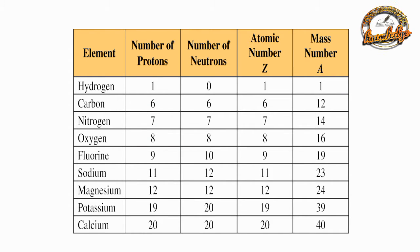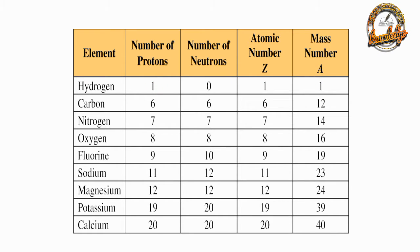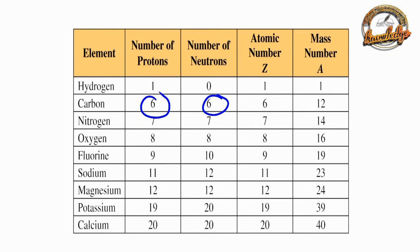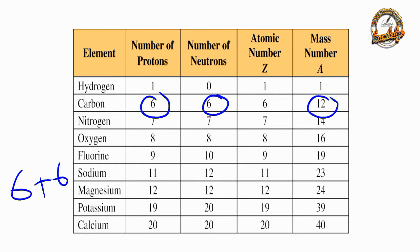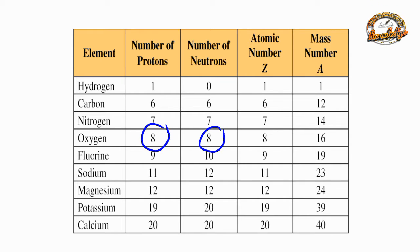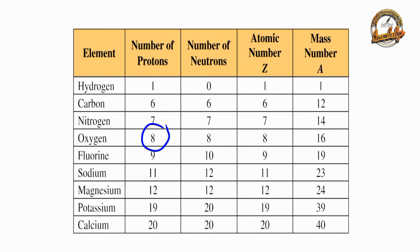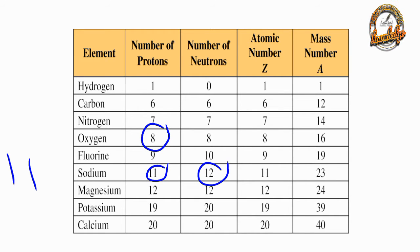For hydrogen: the number of protons is 1 and the number of neutrons is 0, so 1 plus 0 gives a mass number of 1. For carbon: 6 protons plus 6 neutrons equals 12. For oxygen: 8 protons plus 8 neutrons equals 16, so the mass number is 16. For sodium: 11 protons and 12 neutrons, so 11 plus 12 gives a mass number of 23.